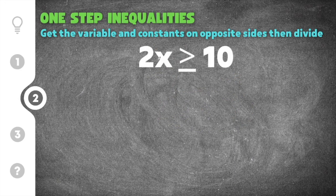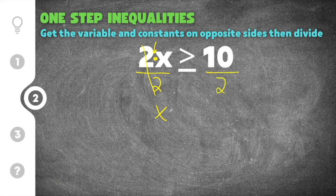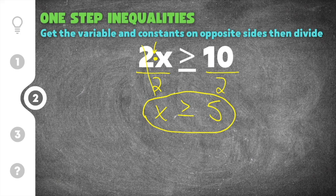The second practice problem gives us 2x is greater than or equal to 10. This time we don't have any constants on the same side as x, so we don't have to add or subtract. But x does have a coefficient — this is like saying 2 times x. To undo 2 times x, we do the opposite and divide by 2, so the 2's cancel and we're left with just x. Whatever you do to one side you also do to the other, so we divide the right side by 2 as well: 10 divided by 2 is 5. The greater than or equal to symbol comes straight down, giving us x is greater than or equal to 5.